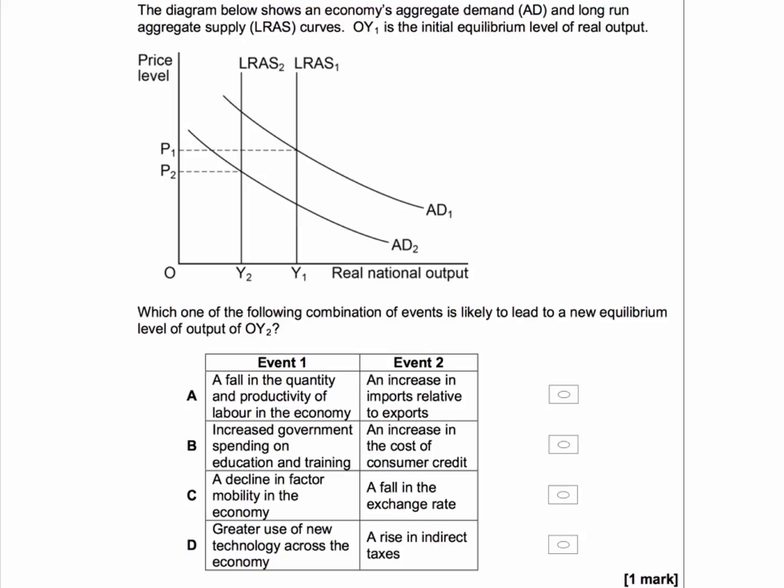So let's go through the questions systematically, as we always do. What about A? A fall in the quantity and productivity of labour in the economy. Yes, that's likely to shift aggregate supply to the left. And an increase in imports relative to exports. Yes,